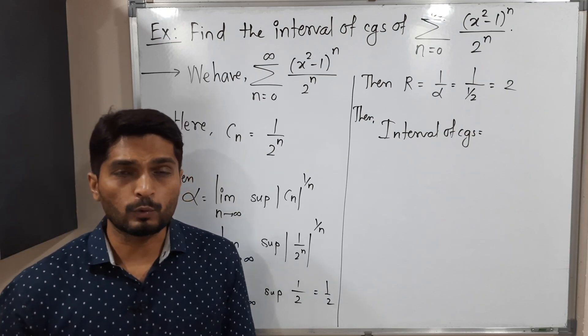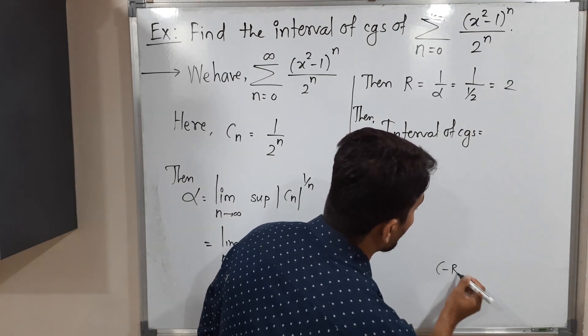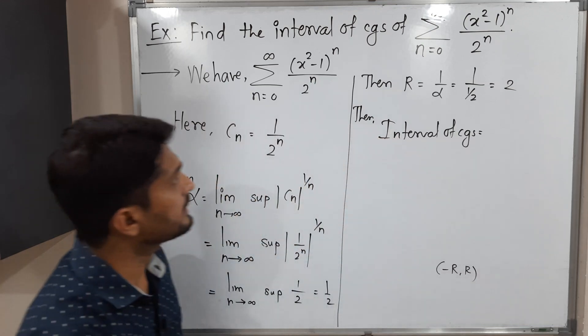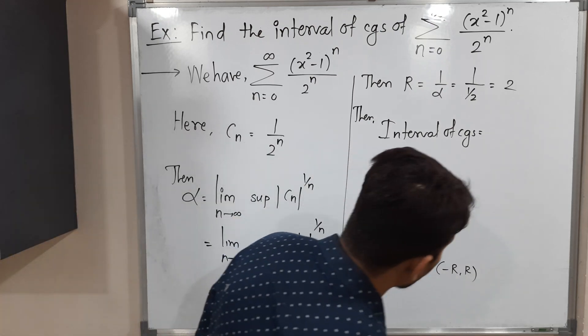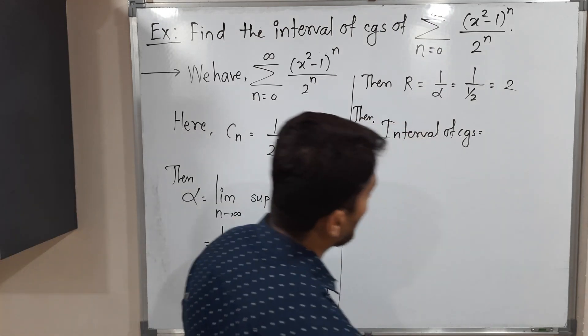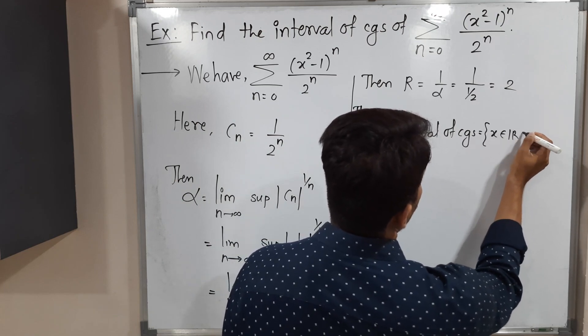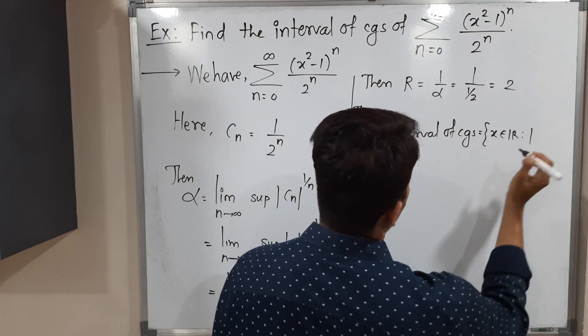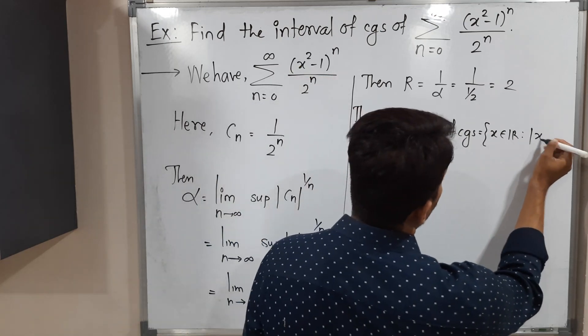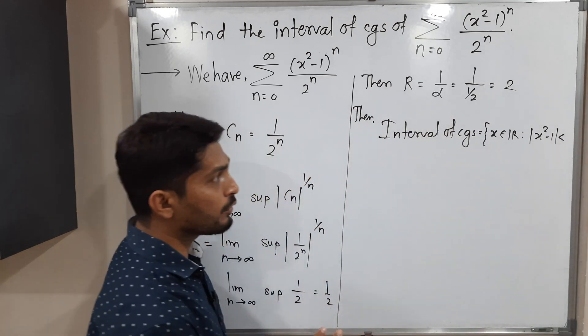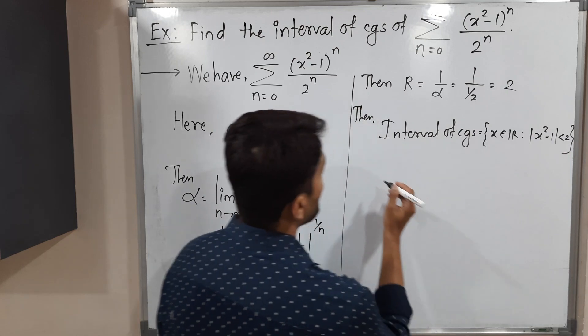Generally when we have a power series around 0, we say the interval of convergence is (-R, R), but we cannot do that here since we have x² - 1, which looks different. So I will simply follow the definition. The definition says it is the set of all real numbers such that |x² - 1| is less than the radius of convergence, which we have got as 2.